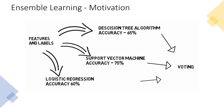For example, assume we have three decision algorithms: a decision tree with some accuracy, an SVM with 75% accuracy, and logistic regression with 60% accuracy. If we use just one of these, the best we can achieve is 75% with SVM. But if we combine these decision makers, it is highly likely that we come up with a much better combined decision maker — that is the idea behind ensemble learning.